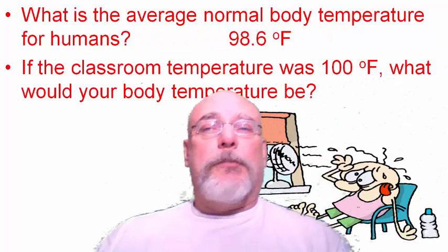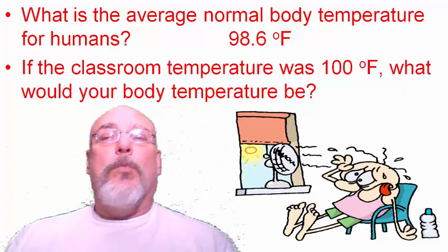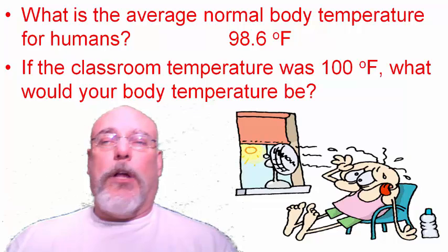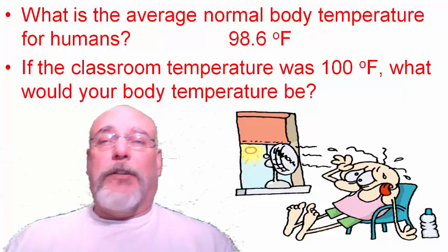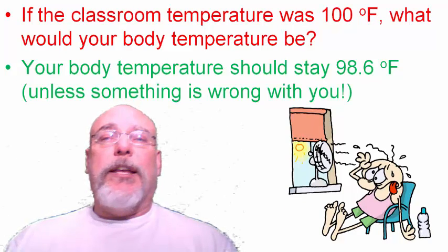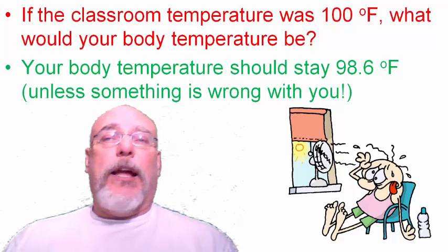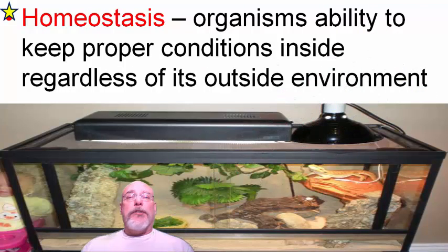If the temperature of the classroom was 100 degrees Fahrenheit, what would happen to your body temperature? Let's say we take your temperature every 30 minutes sitting in a room that's 100 degrees Fahrenheit. Your body temperature is going to stay at 98.6 degrees Fahrenheit in general, unless something is wrong with you. That ability — to keep proper conditions inside regardless of the outside environment — is what's known as homeostasis.